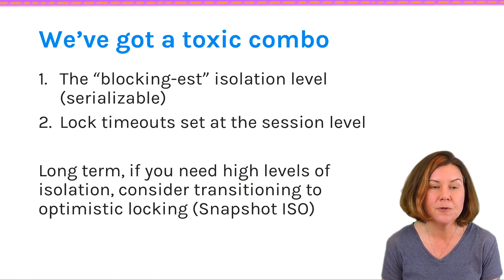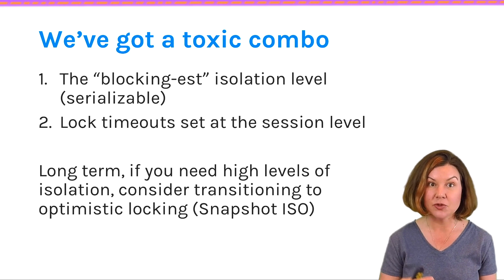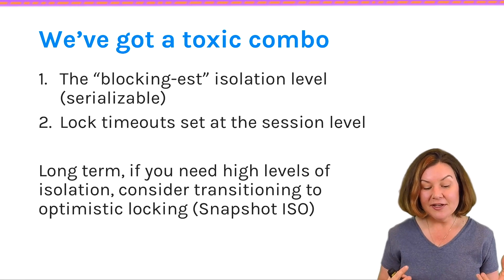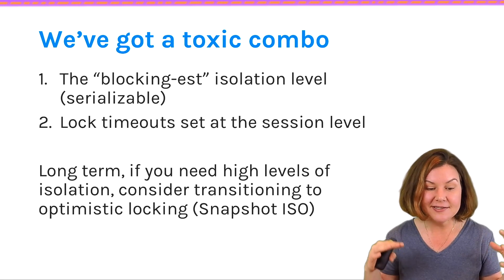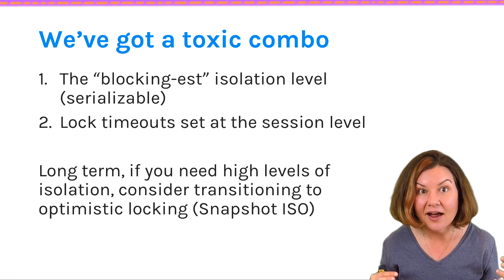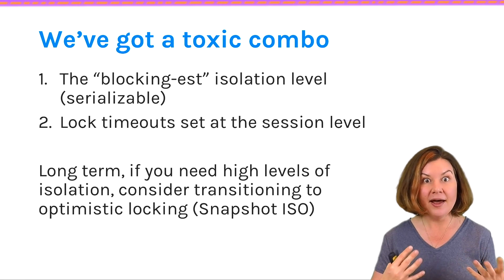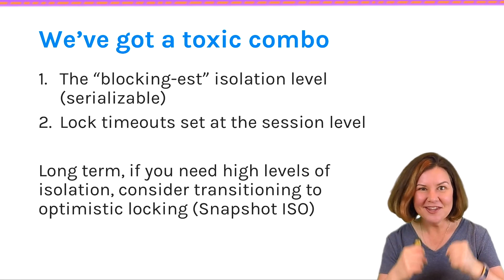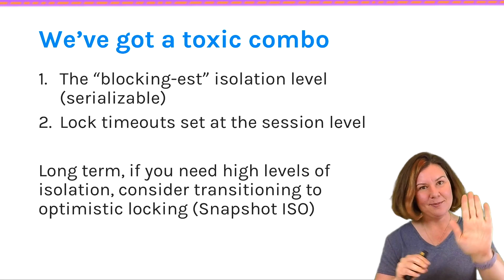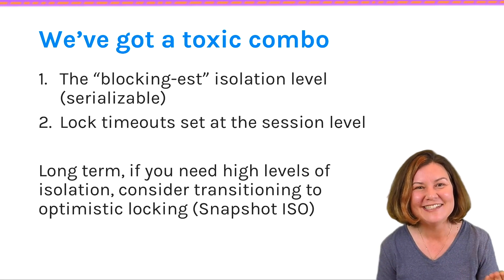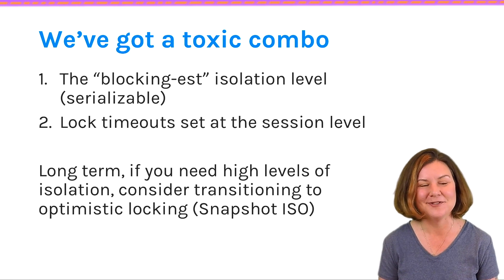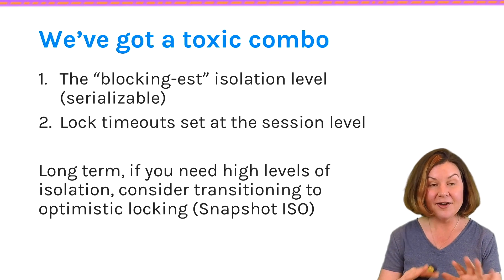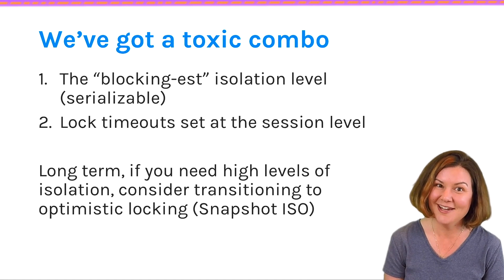Quite a few folks have tested using cascading updates and deletes and backed out of it because they had big problems with range locks and blocking on very active systems. They needed to change the pattern so they could control exactly what changed where and under what isolation level. We have a toxic combo in this question: we've got the blocking-est isolation level, which is serializable — it uses range locks and that can cause lots of blocking — and then we've also got lock timeouts set for the session. So we've got queries that really want to block, and a setup where they won't wait.